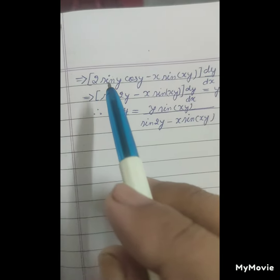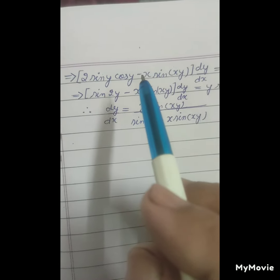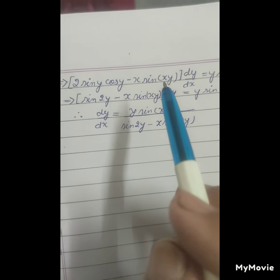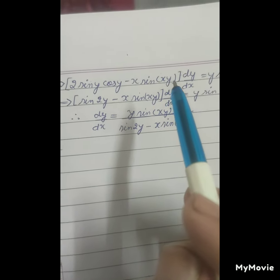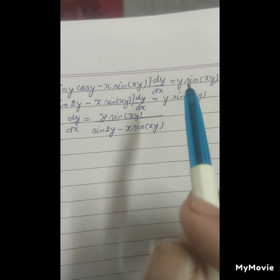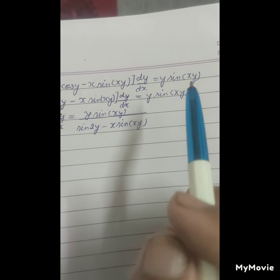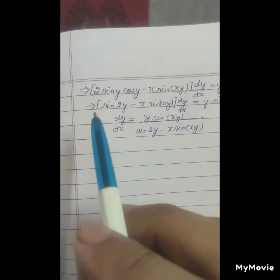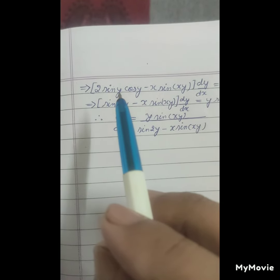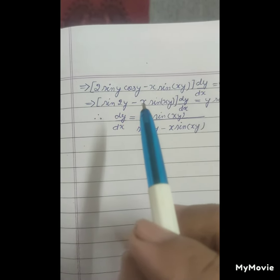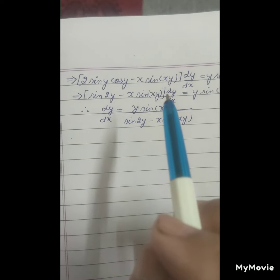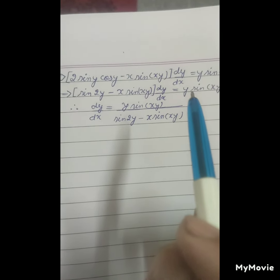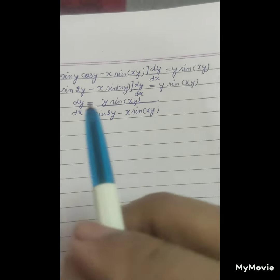So which employs 2 sine y cos y minus x sine xy dy upon dx equals to y sine xy. 2 sine y cos y equals to sine 2y minus x sine xy dy upon dx equals to y sine xy.